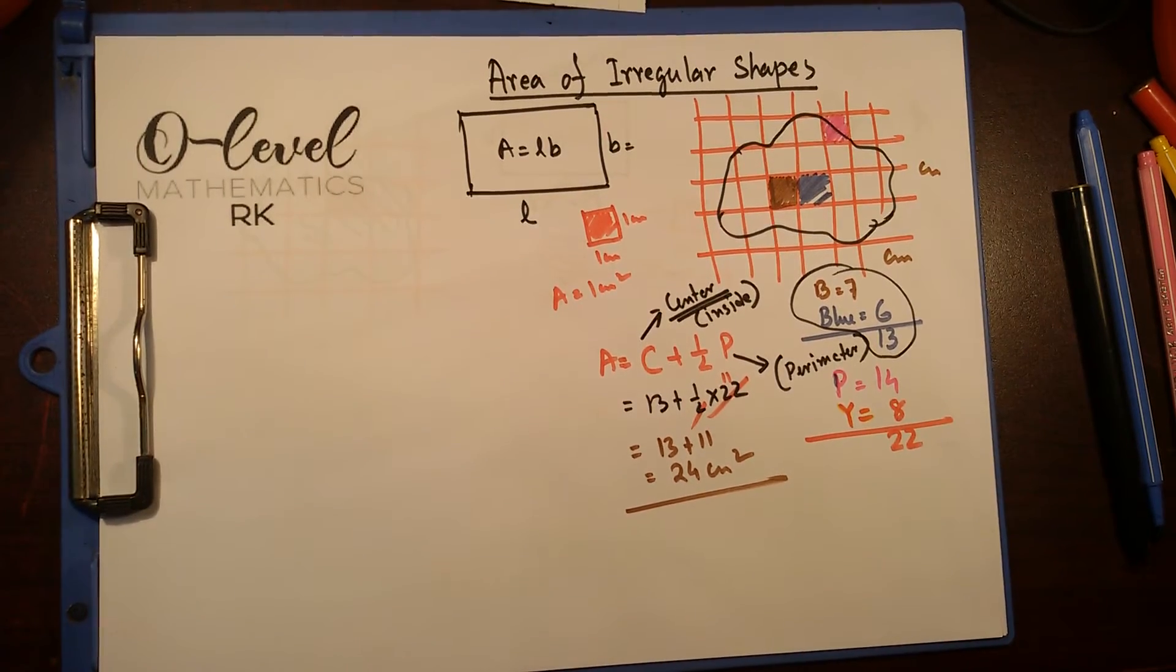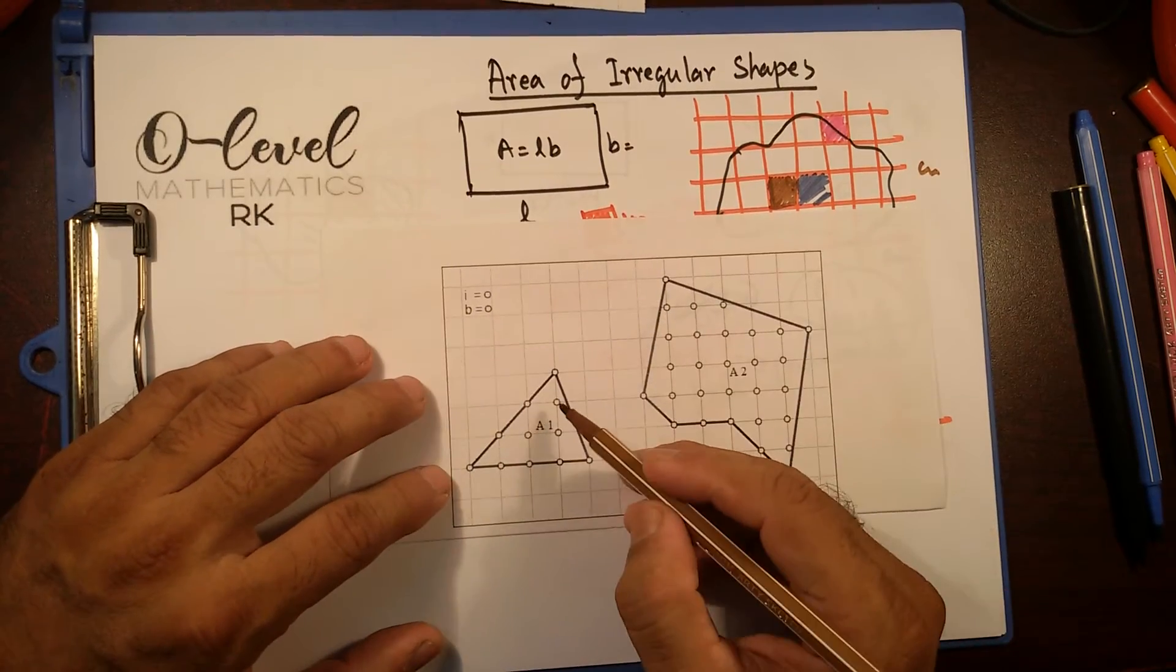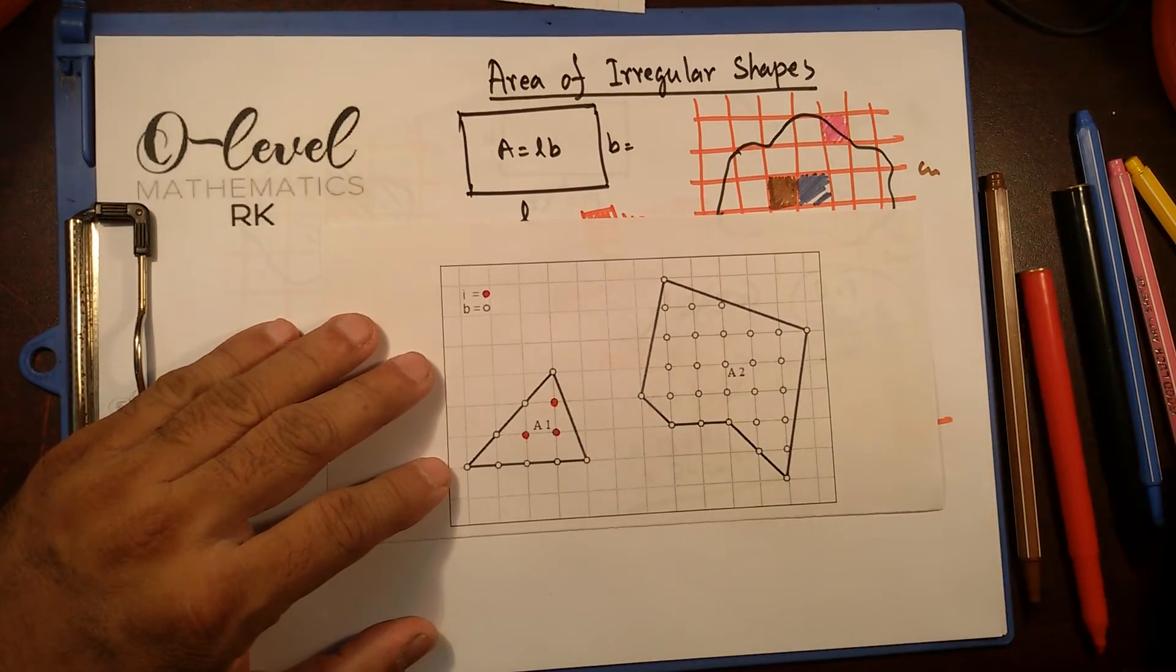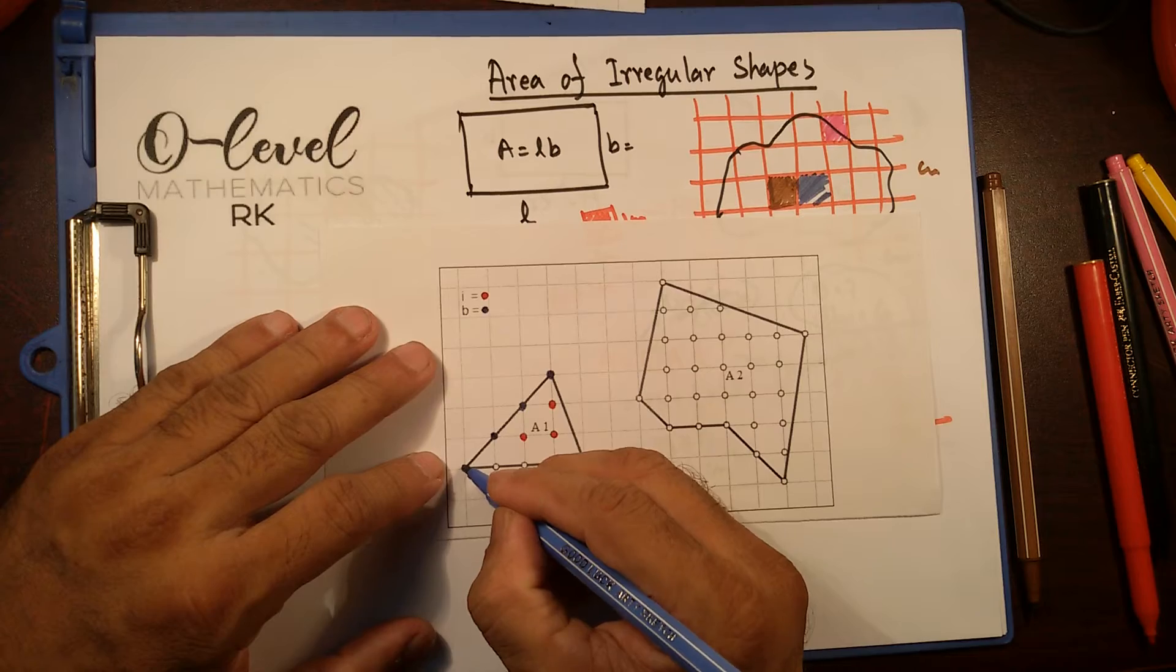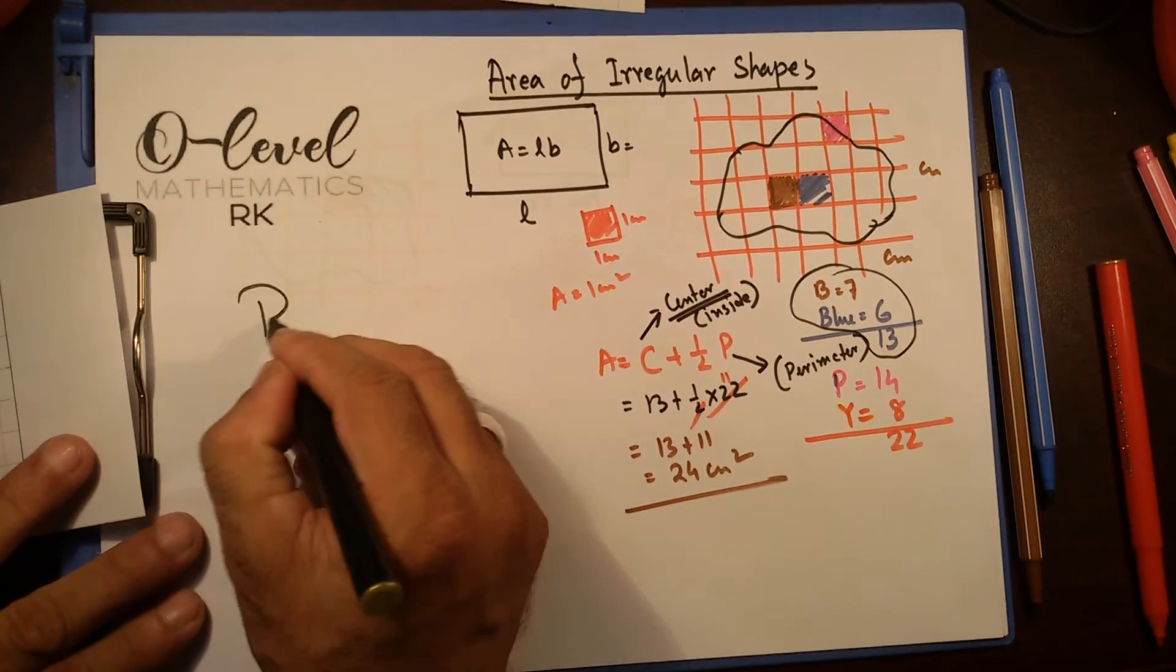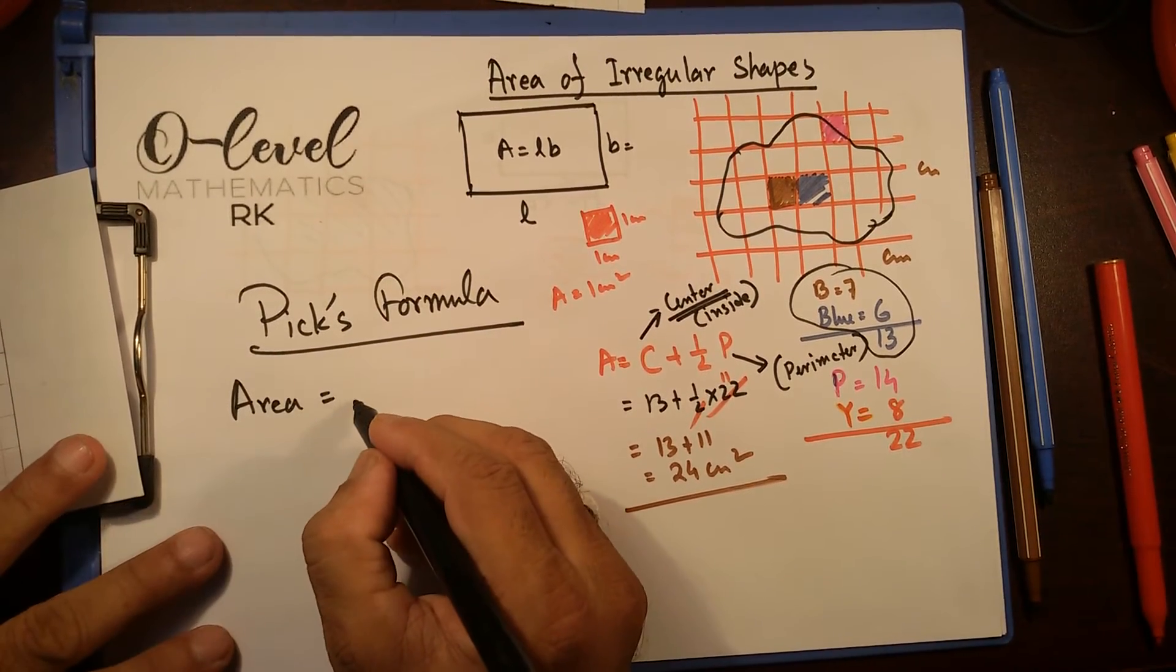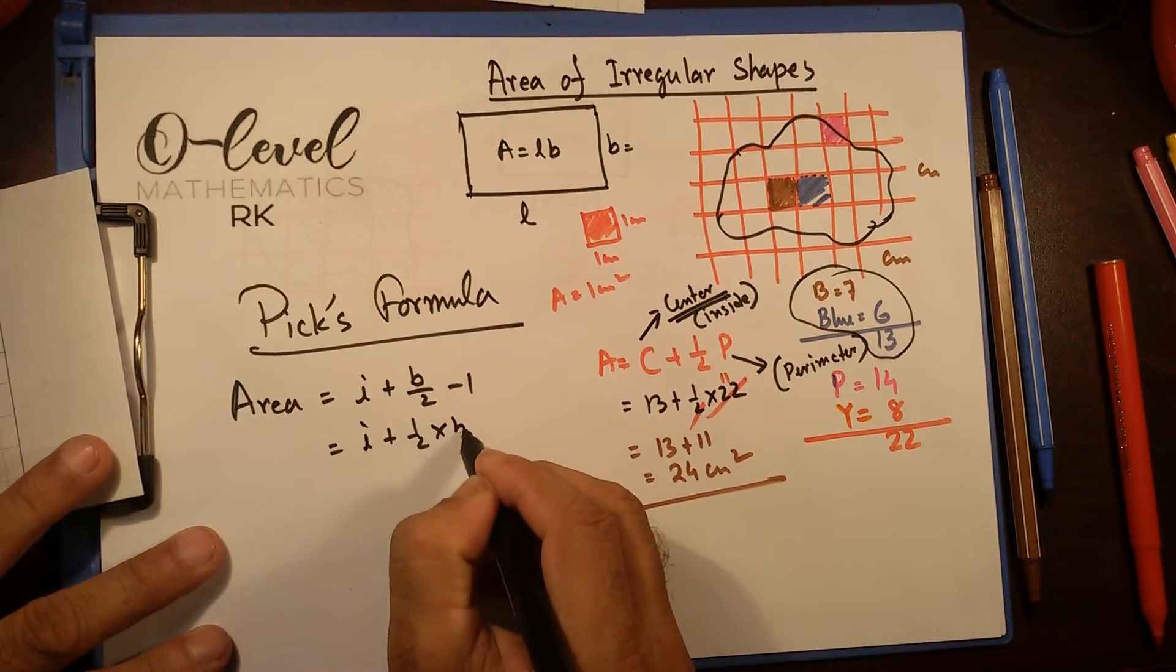Another way is Pick's Theorem. I have these two spaces, I and B. I is inside the space, inside the shape. Let's color that inside with red. And everything that's on the boundary by blue. The Pick's Formula, it goes: area equal to I plus B by 2 minus 1, or you can say I plus half times B minus 1.